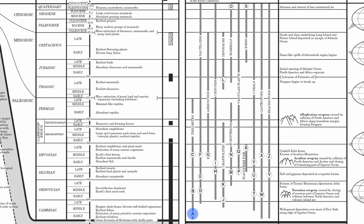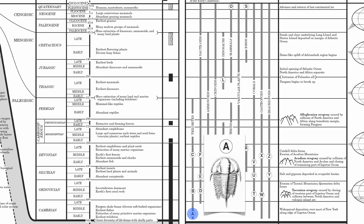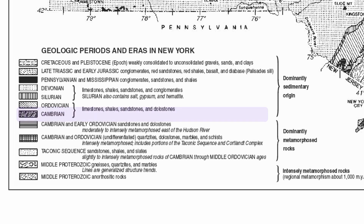We're going to start with a special trilobite labeled letter A. Trilobite A's name is Ellyptocephala, and it lived during the Cambrian period. Even though trilobites lived from Cambrian all the way up to late Permian, this specific species only lived and died during Cambrian time. Because you know it lived during Cambrian time, you're going to find that symbol highlighted on page 3 of your Earth Science reference table. That Cambrian rock is of sedimentary origin, and sedimentary rocks are the only type of rock that will contain any type of fossil.